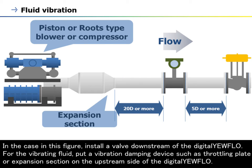In the case shown in this figure, install a valve downstream of the digital yearflow. For the vibrating fluid, put a vibration damping device such as a throttling plate or expansion section on the upstream side of the digital yearflow.